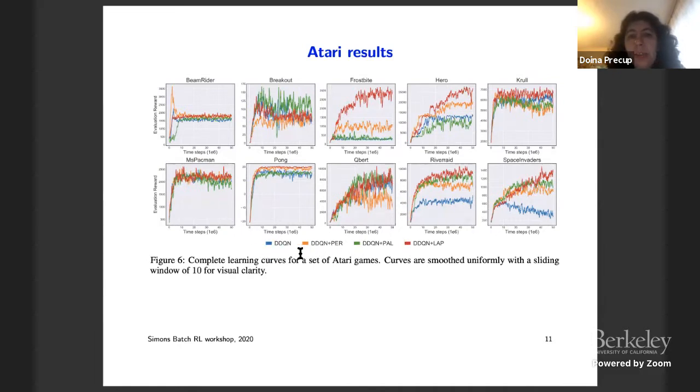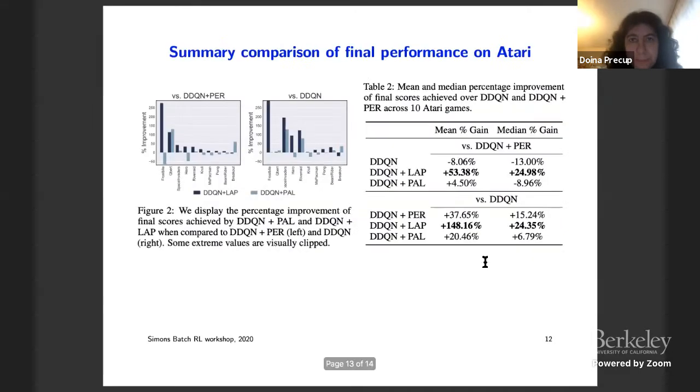As of course as we would expect in theory, no doubt that the theory is an expectation version whereas here we have of course samples. We can look at Atari results. Here we are combining these ideas with double DQN and so the blue lines are double DQN, the orange lines are double DQN plus prioritized experience replay, and then again we can eliminate the bias of prioritized experience replay and also add this uniform sample buffer. And as before we can see that the proposed algorithms tend to be better, not always but tend to be better than the other versions.